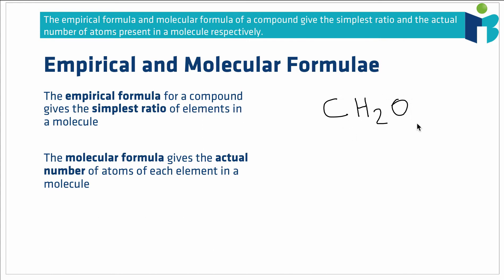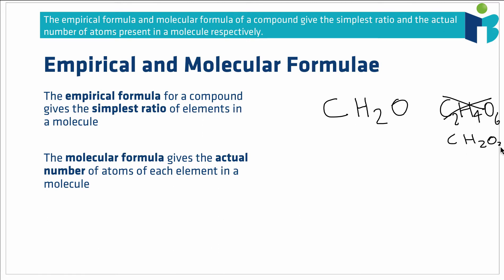If we had a formula like C₂H₄O₆, this would not be a possible empirical formula because it's not the simplest ratio of atoms. The simplest ratio in this case would be CH₂O₃ — that is a perfectly good empirical formula because we can't reduce the ratio any further.